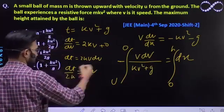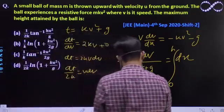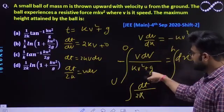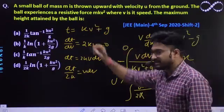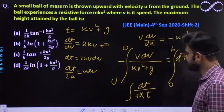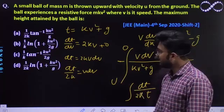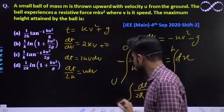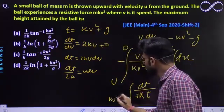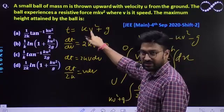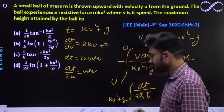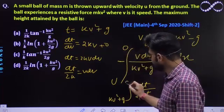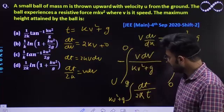Now put the value of v dv. dt is nothing but equal to 2k. We'll put the value of v dv here. The value of v dv here is dt by 2k. In the denominator kv² plus g we have already taken as t. So it would come out to be t here. When you take v as u, the value of t is ku² plus g. When you put v as zero, the value of t is g.